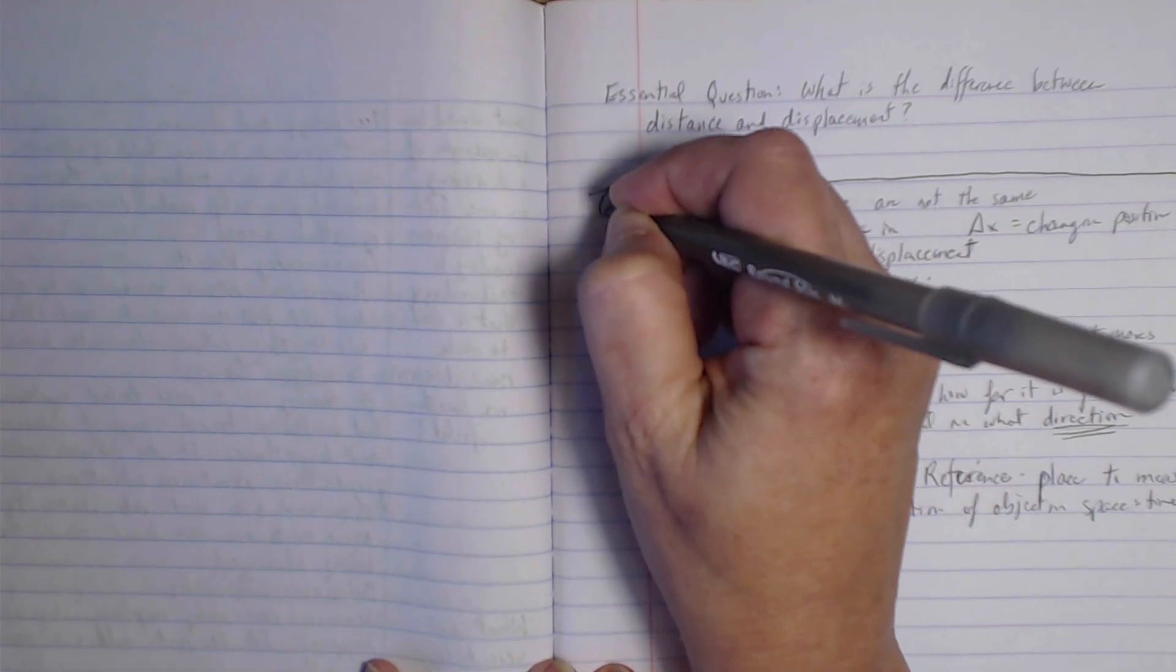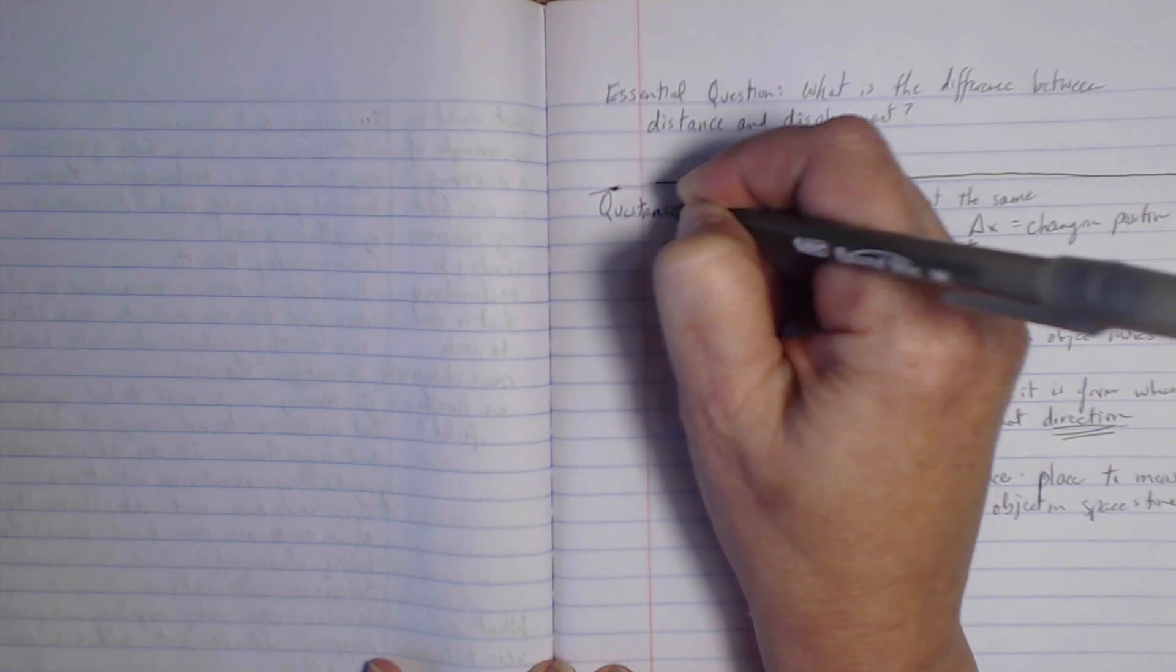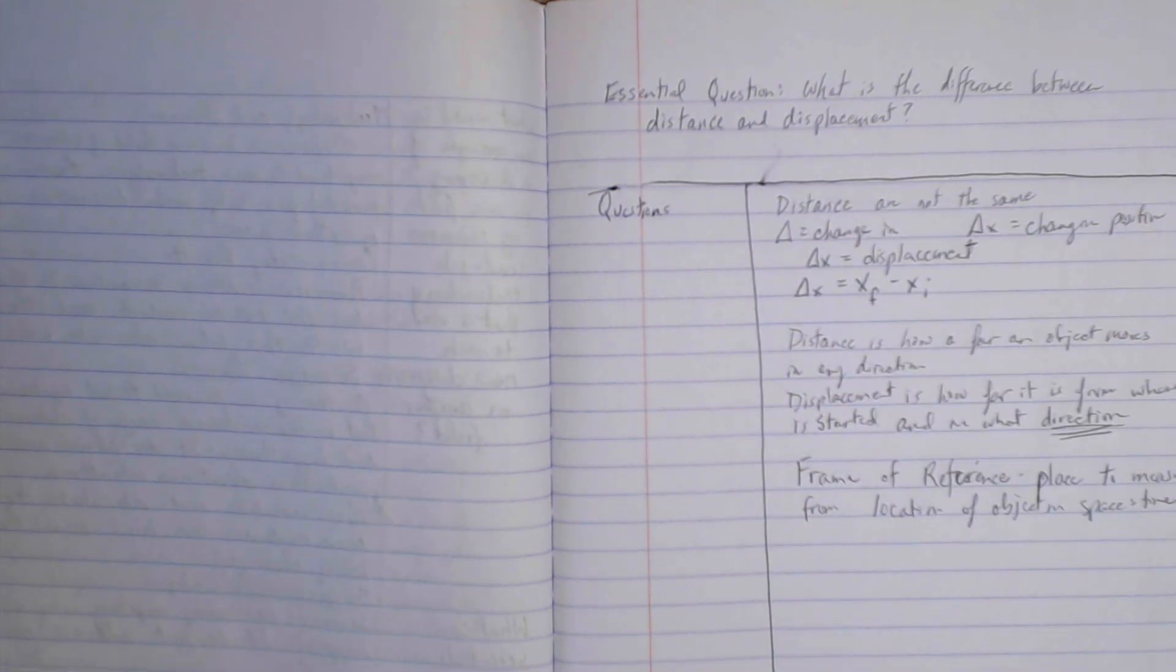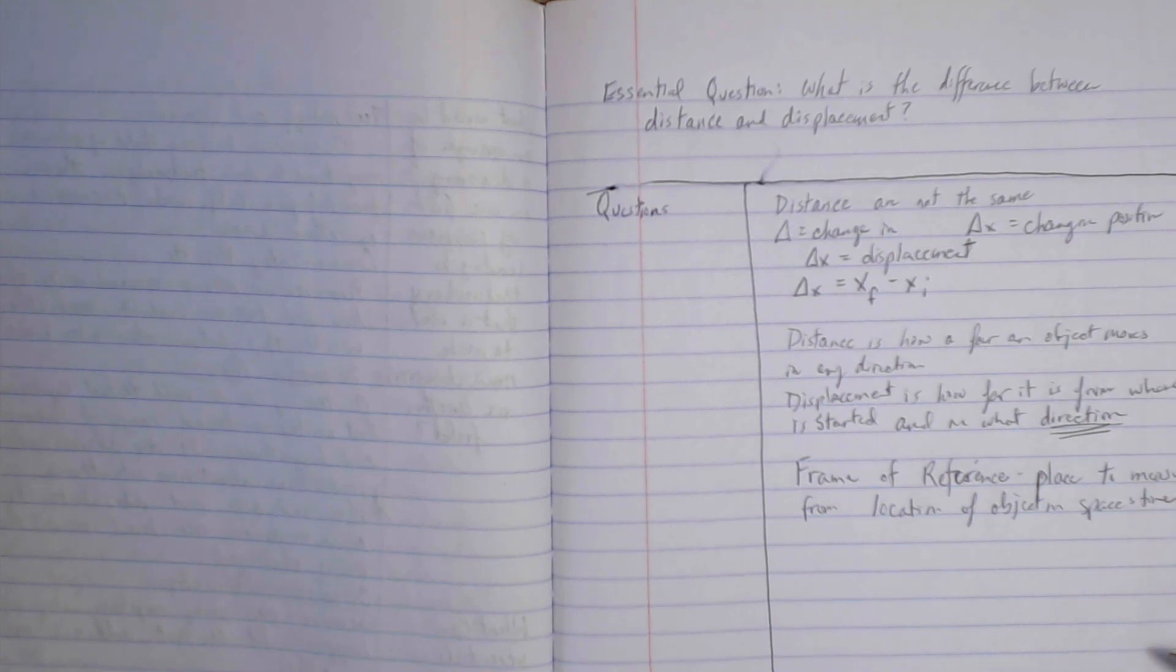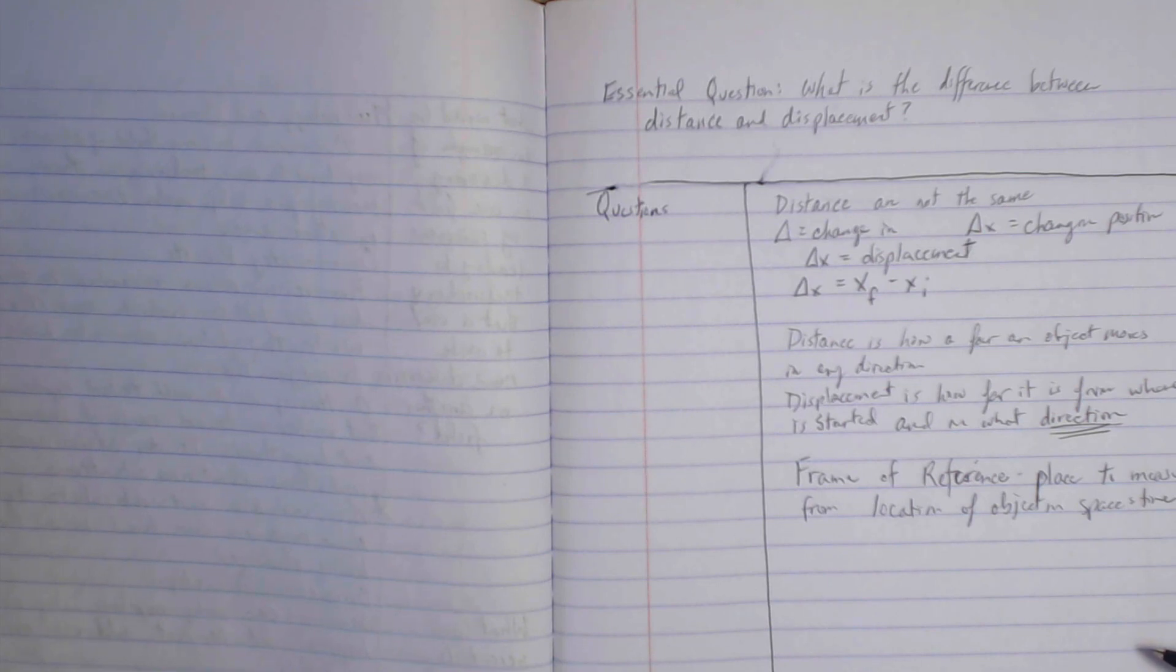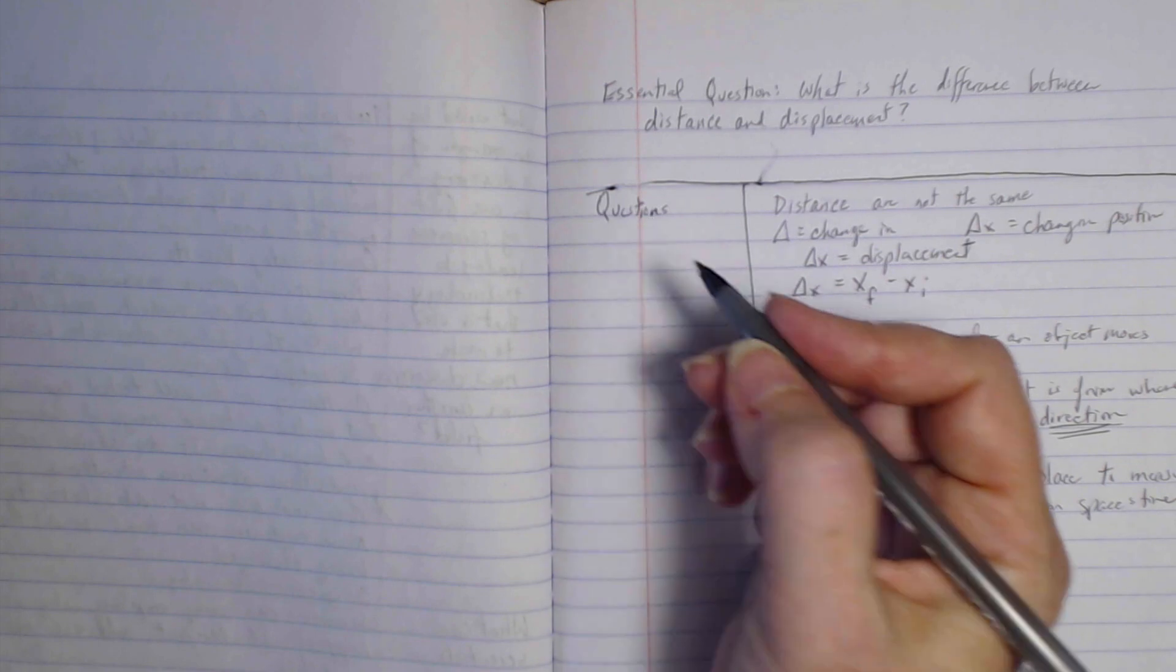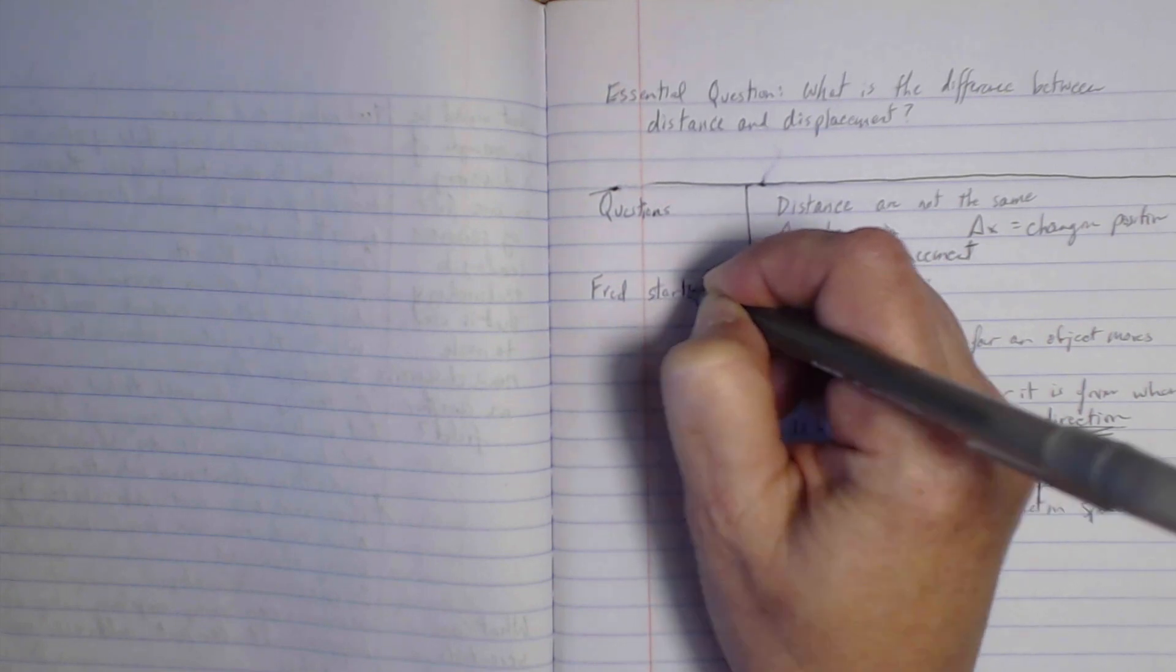This section over here is for questions. These are what we call high-level questions. Things that you think might be on the test. The area down below is for summary, summarizing in your own words what you've taken notes on. I think the questions are probably the toughest part. So what kind of a question might I ask you about this? Just a definition question is a low-level question. So we don't want one of those.